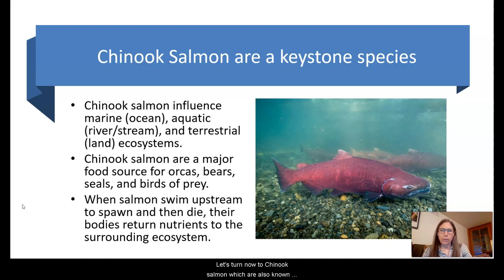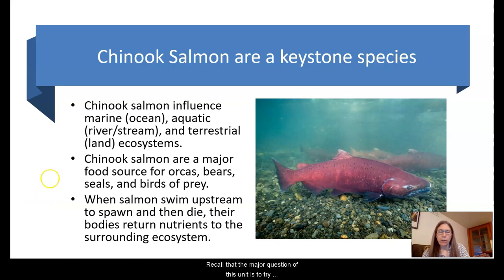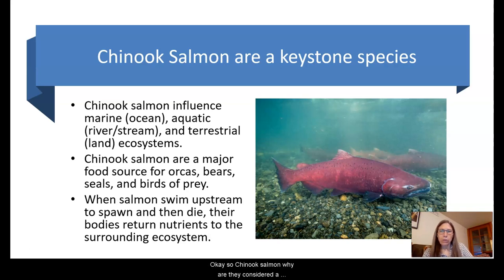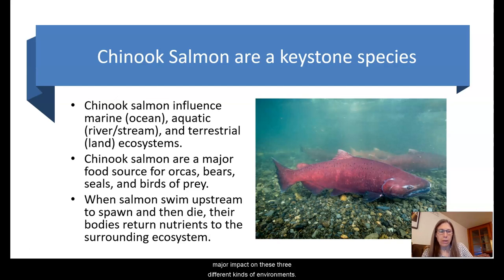Let's turn now to Chinook salmon, also known as king salmon, and their role as an important keystone species. Recall that the major question of this unit is to understand the factors involved in causing the decline of orca populations. You've learned in previous lessons that southern resident orcas largely feed on Chinook salmon as their primary source of food. Chinook salmon are remarkable in that they are influential in marine, aquatic river and stream, and terrestrial ecosystems — having a major impact on these three different kinds of environments.